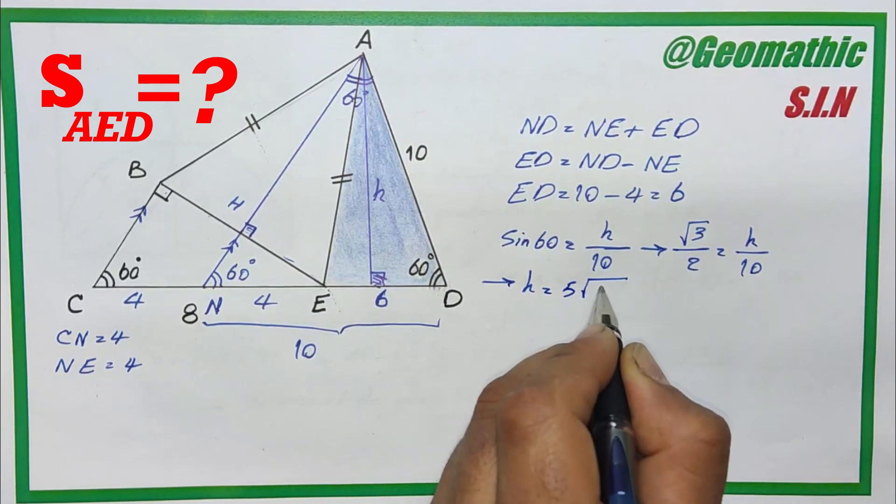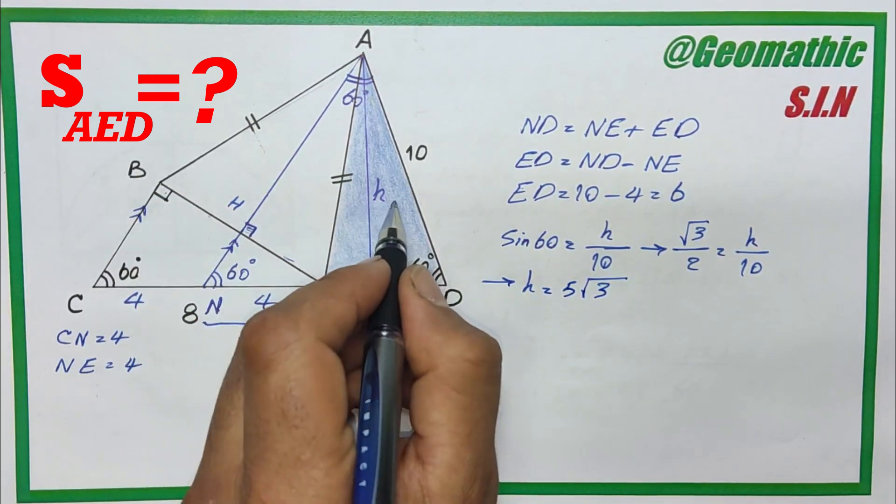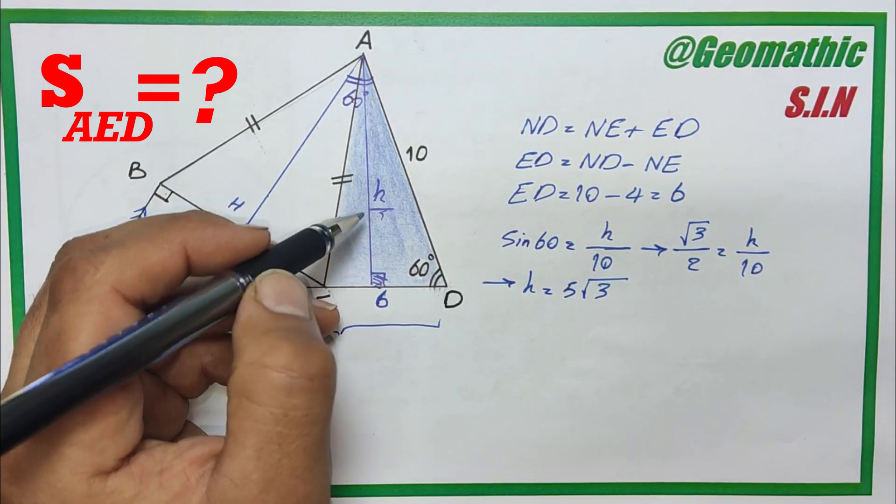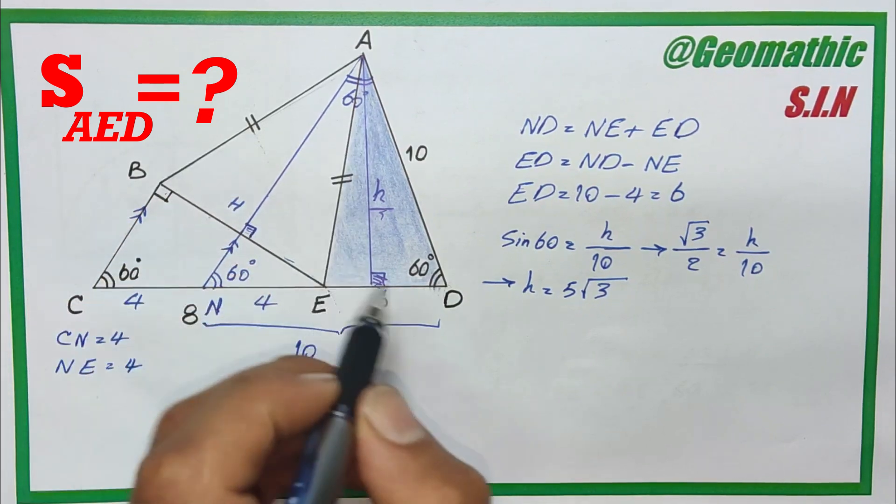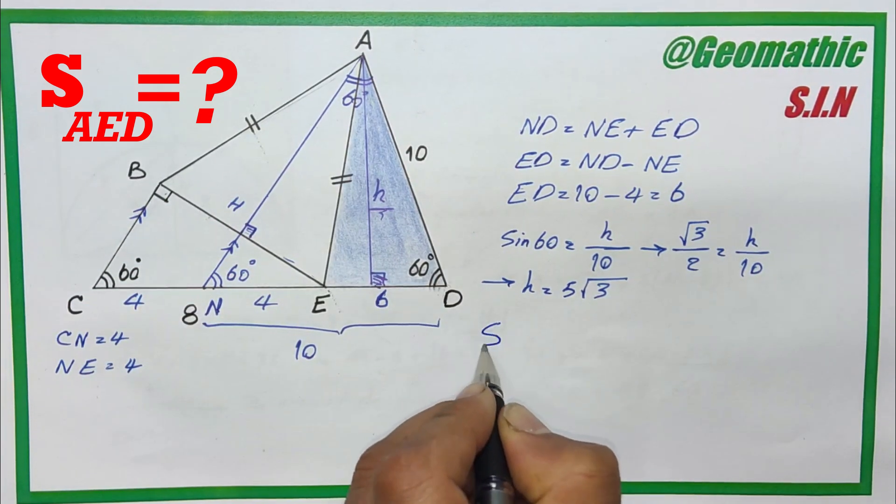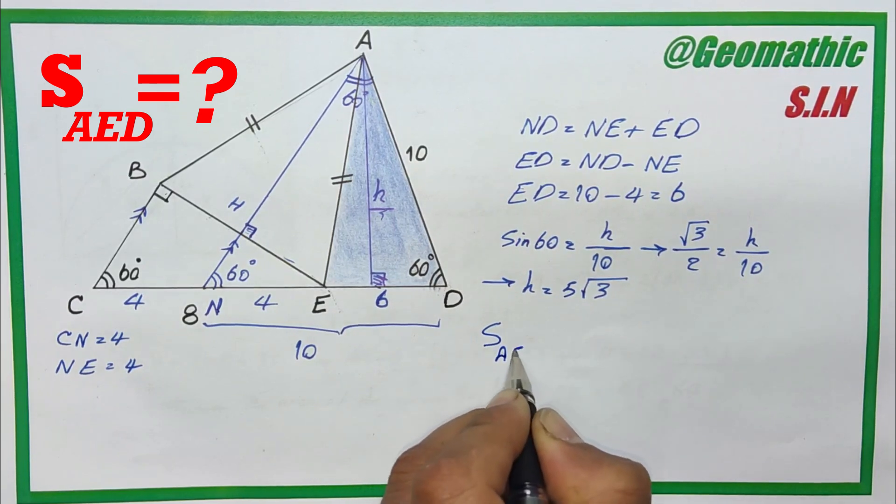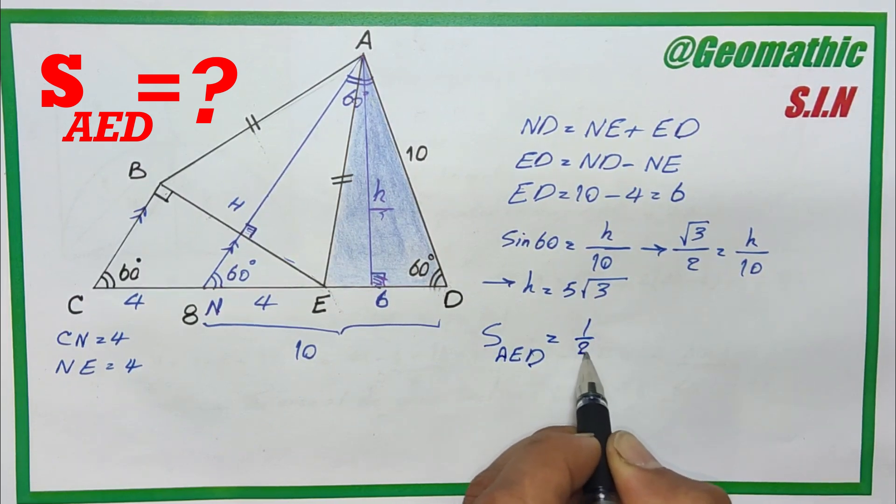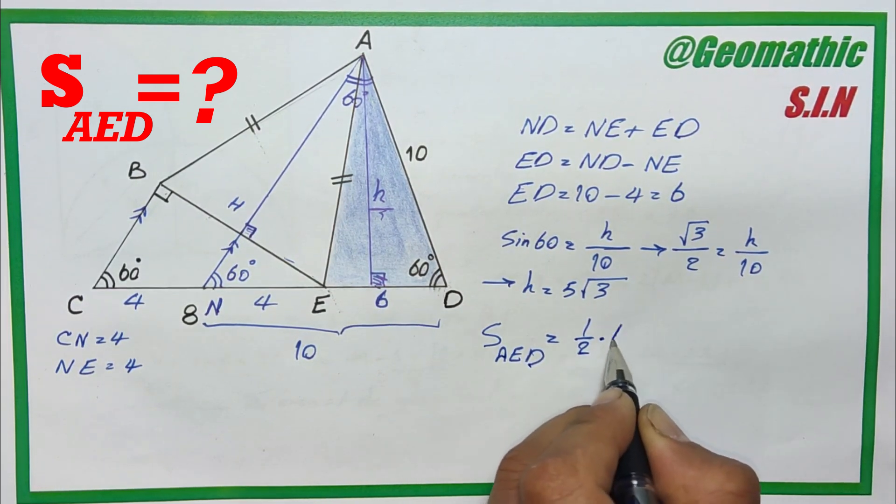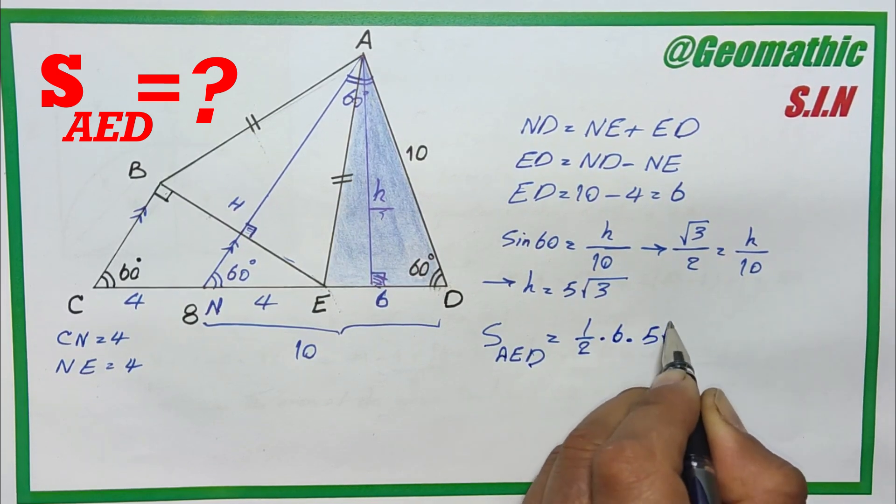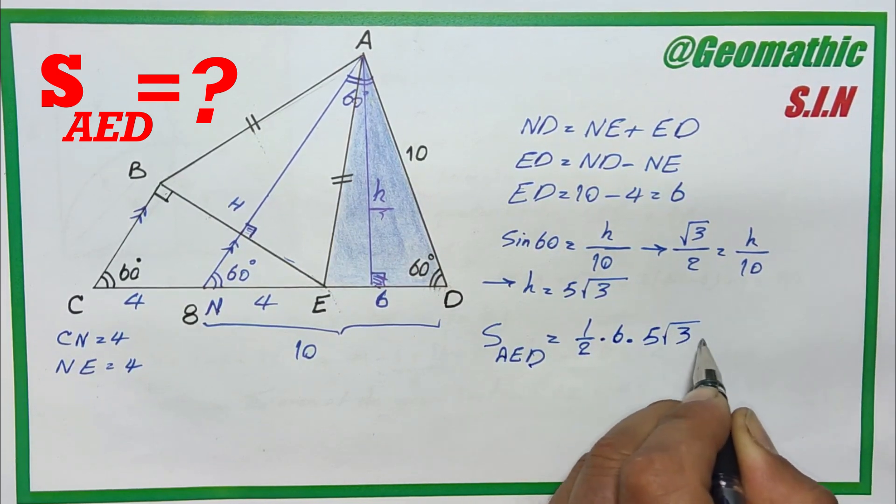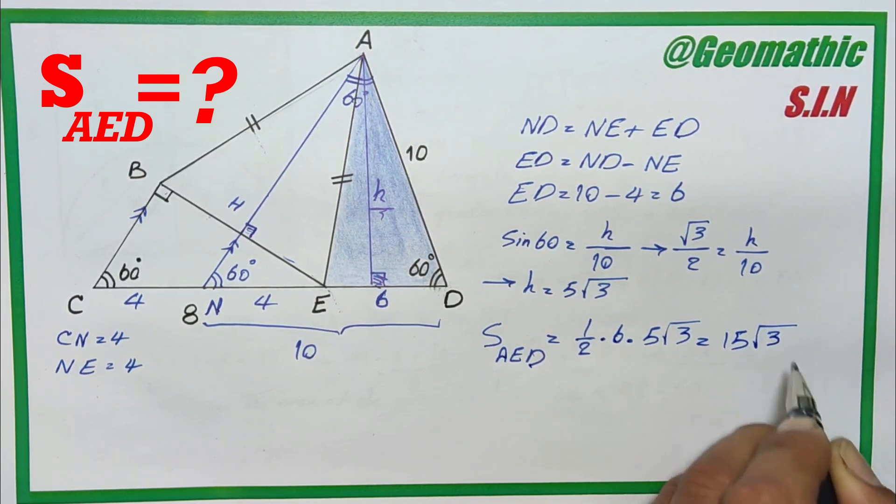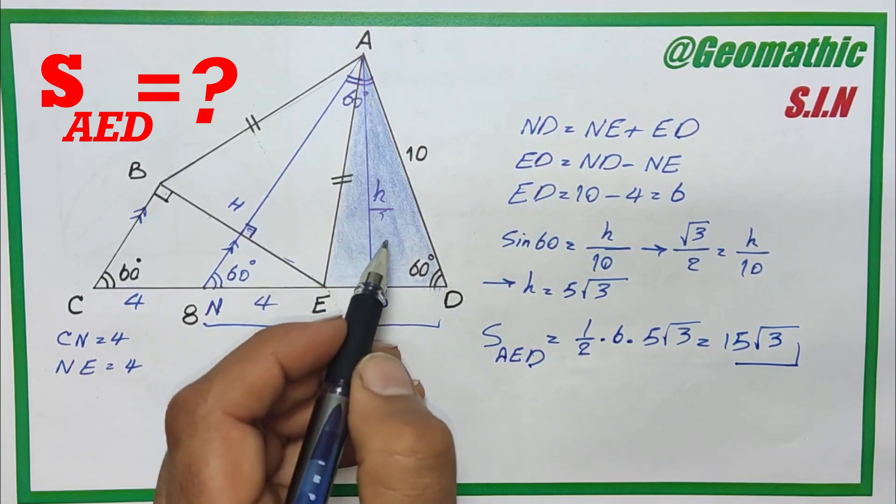Now we have this value, and we know the area of the triangle equals 1 over 2 times altitude times base. The area of AED equals 1 over 2 times 6 times 5 times the square root of 3, which equals 15 times the square root of 3. And this is the area of this triangle.